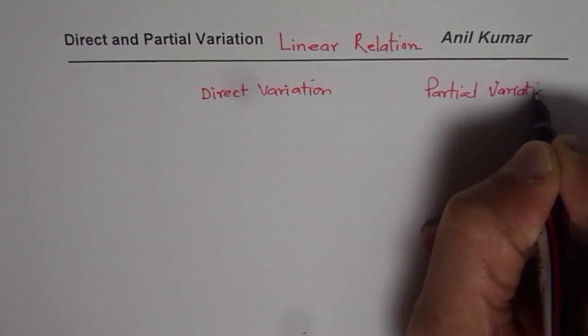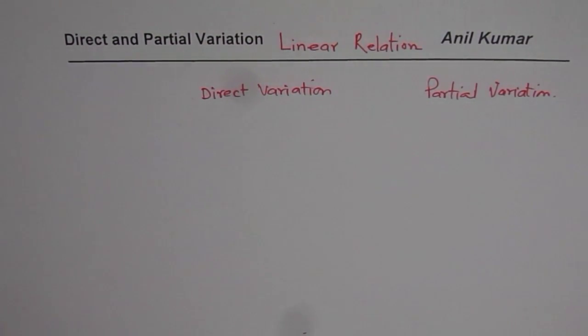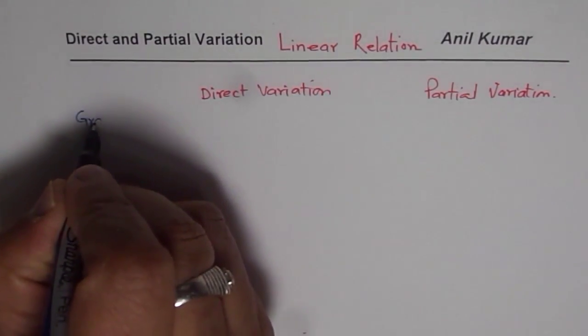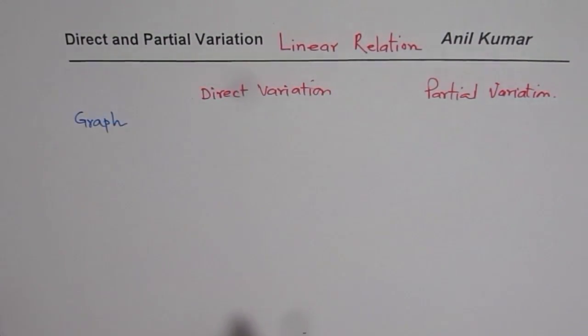Now, one way is to investigate their graph. So that is kind of a very simple way. If you have a graph, you can figure out whether it is direct or partial.